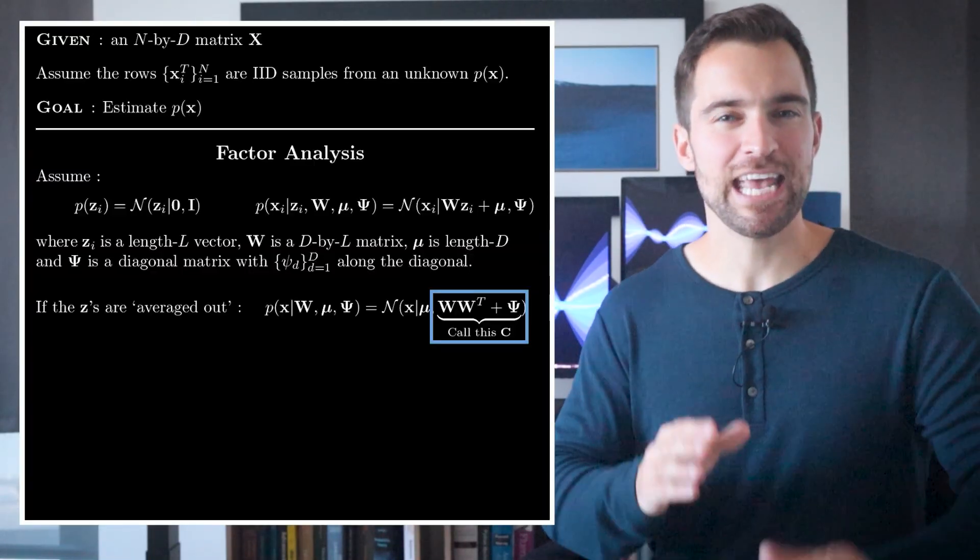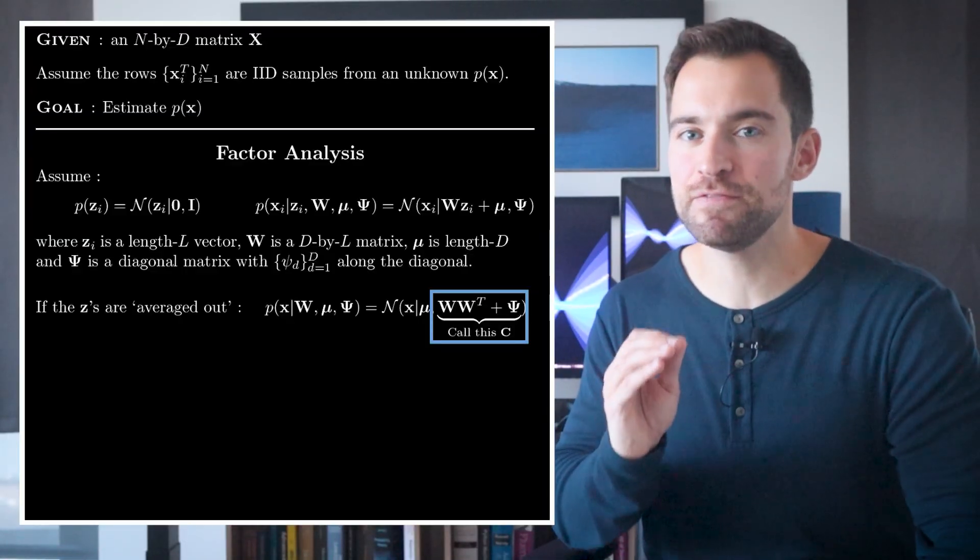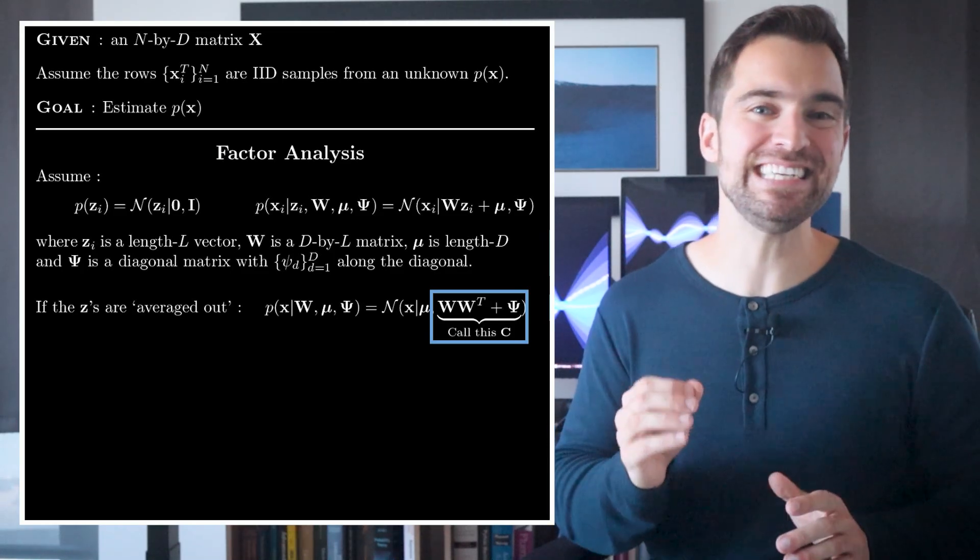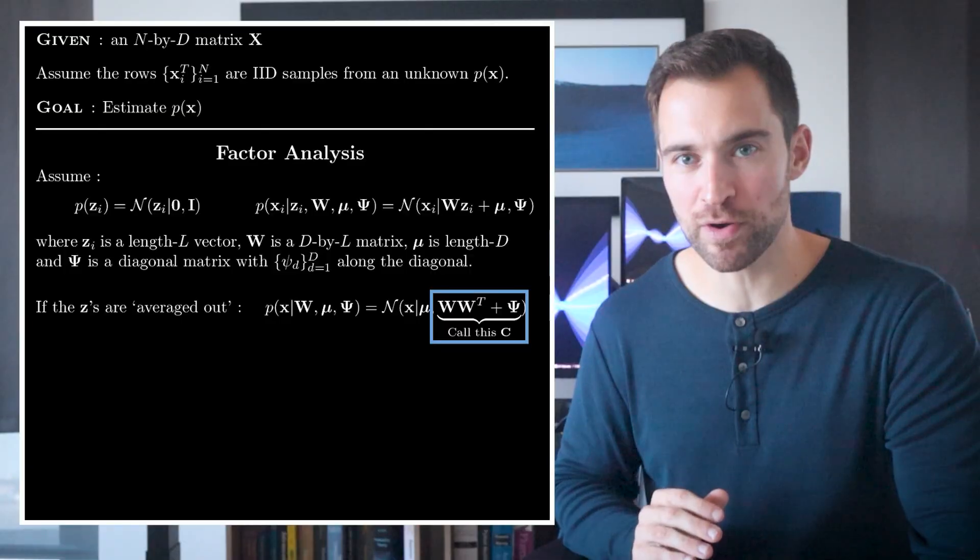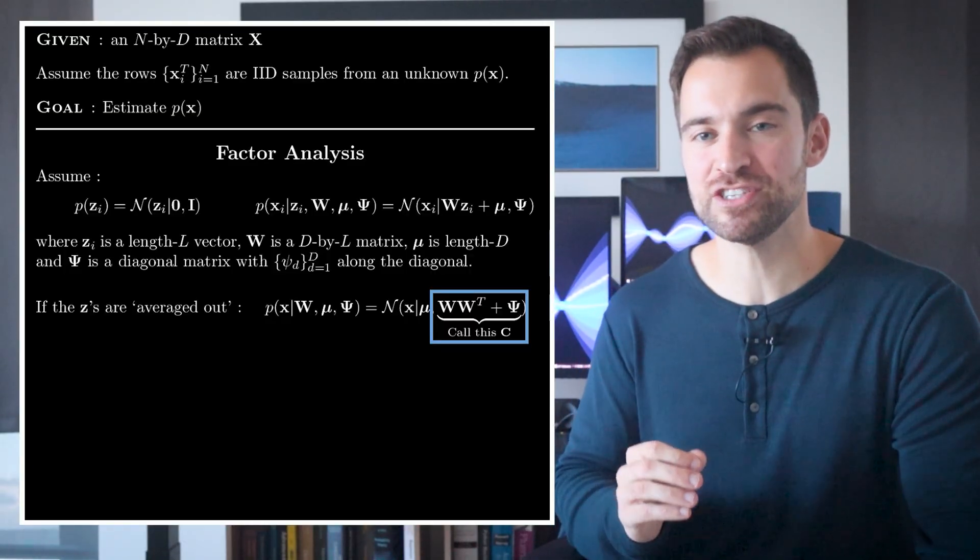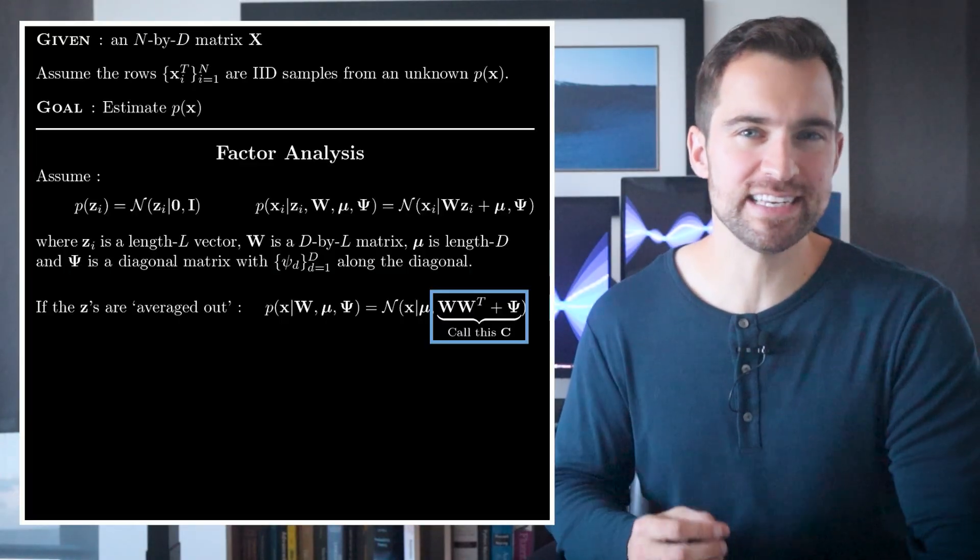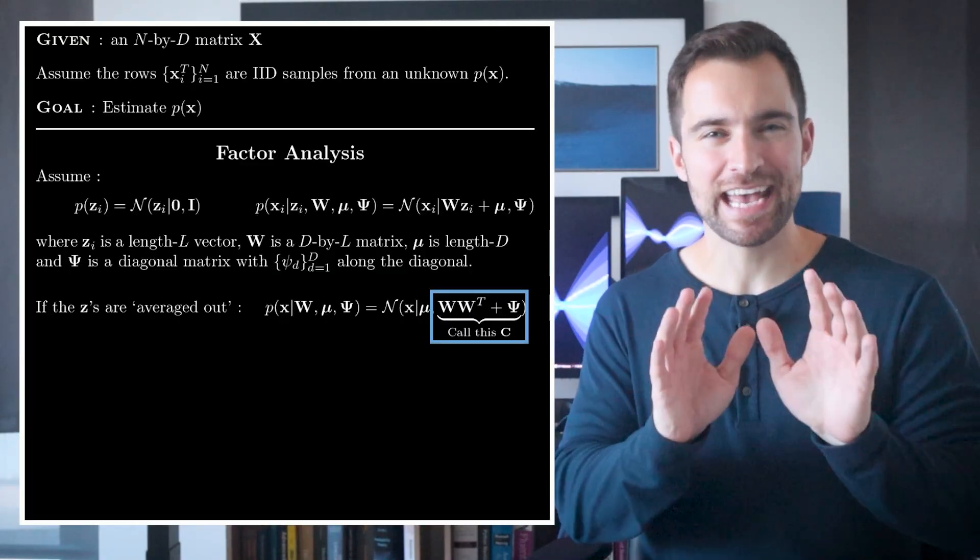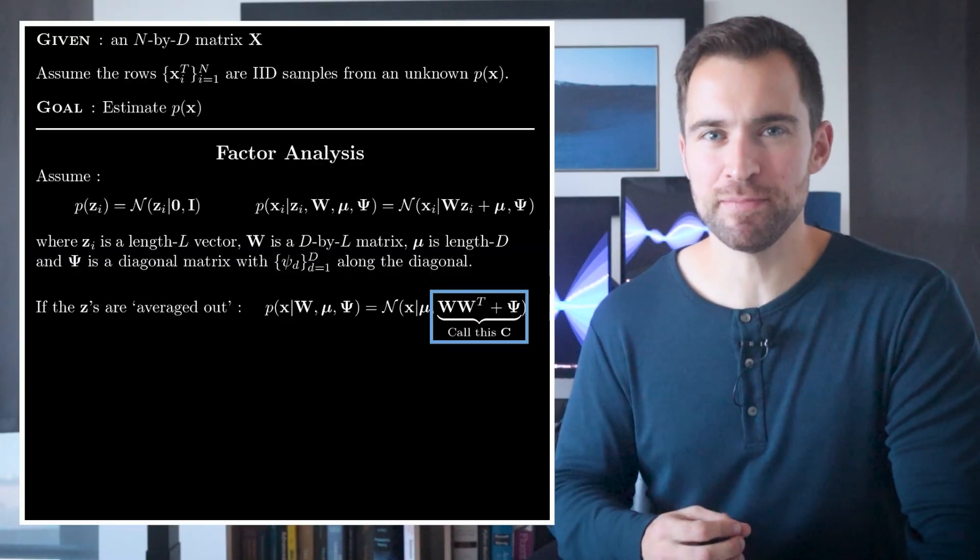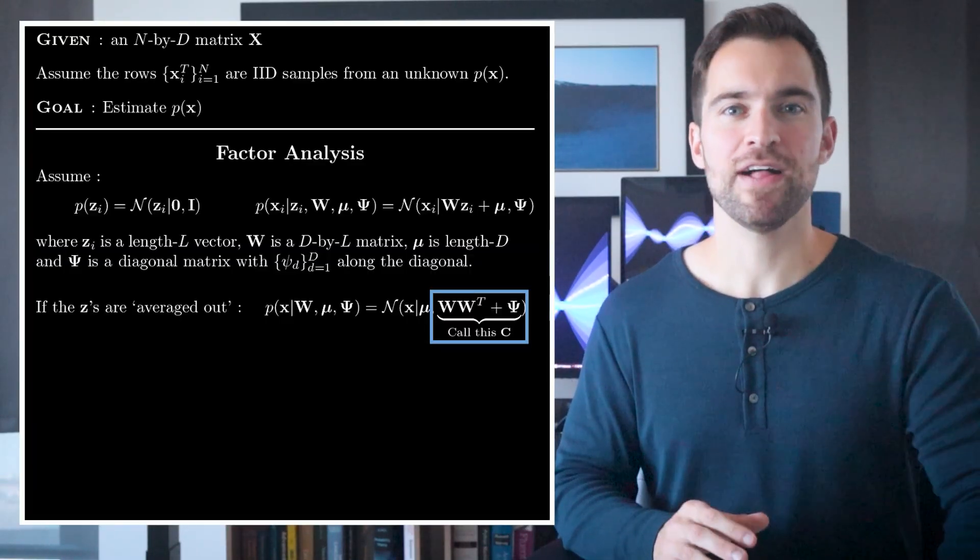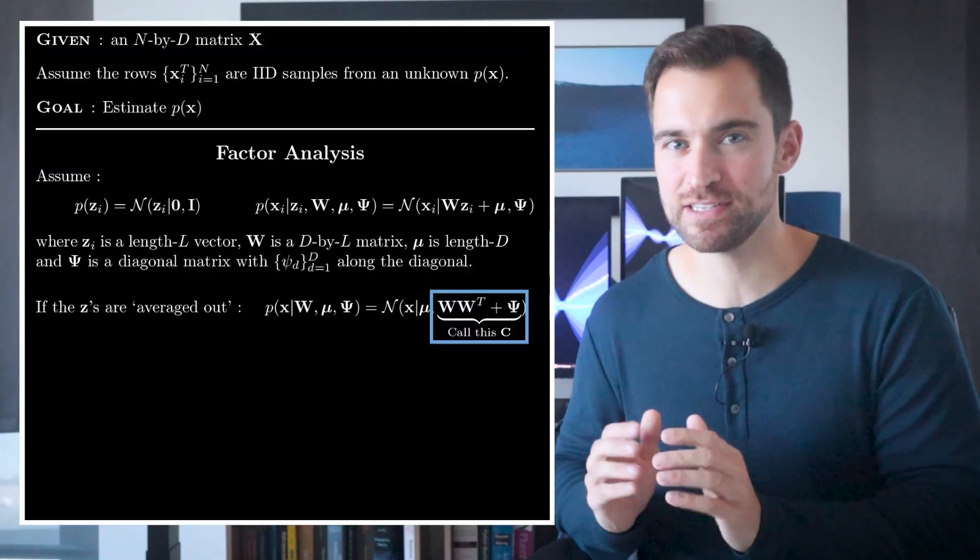The interesting thing is, if L is much less than D, which it should be, then this expression involves a lot fewer parameters than the roughly D squared over 2 involved in a typical multivariate normal. This is the whole point. With this, we could fit a model in higher dimensions with much less data. However, an L substantially less than D is not without its cost. It may yield too inflexible of a model. Here, L, like in many models, is a hyperparameter that allows us to flexibly move from simple and easy to estimate models to complex and hard to estimate models.